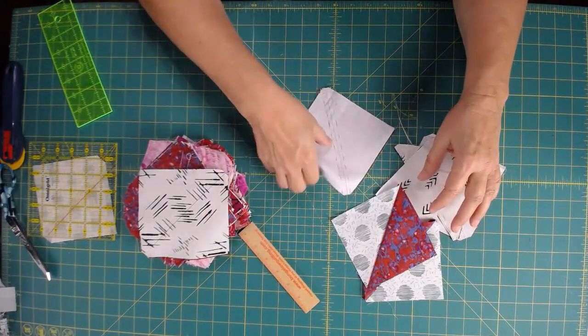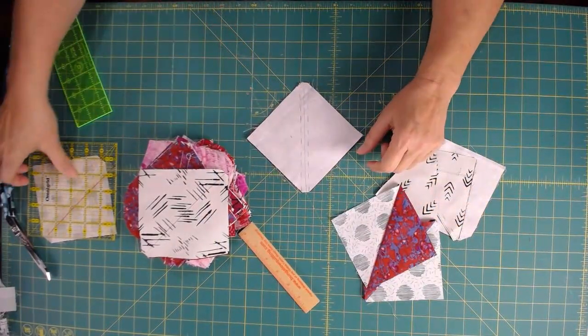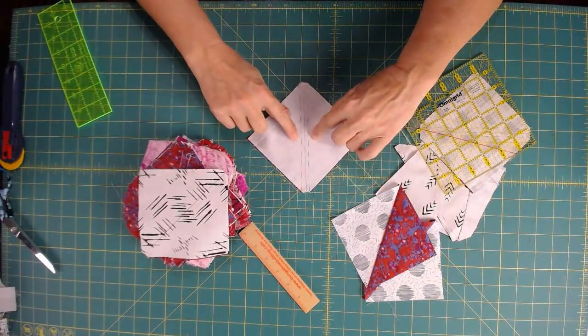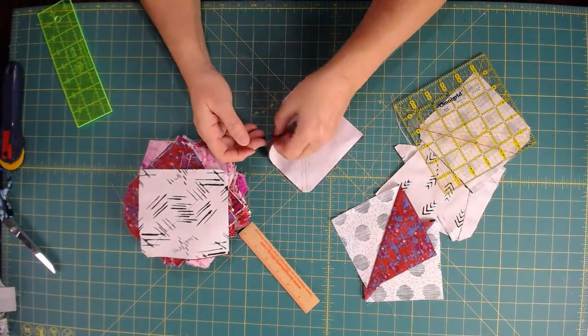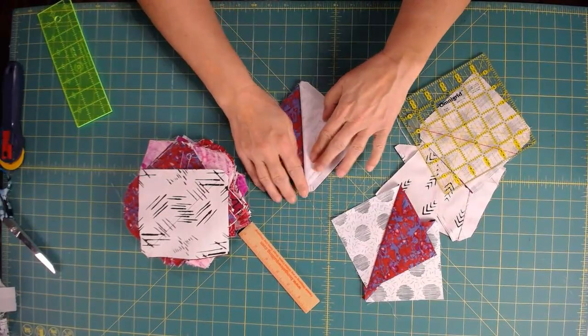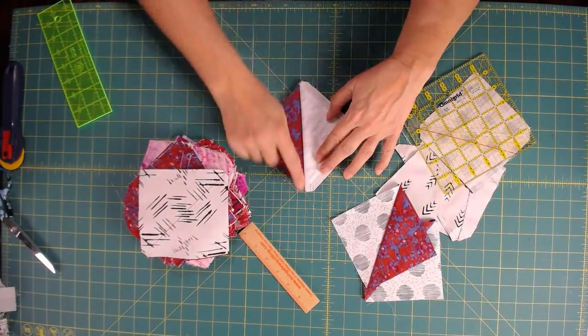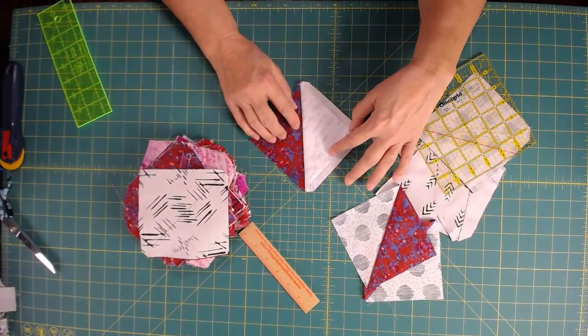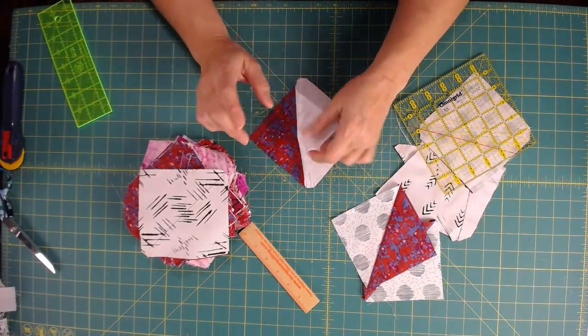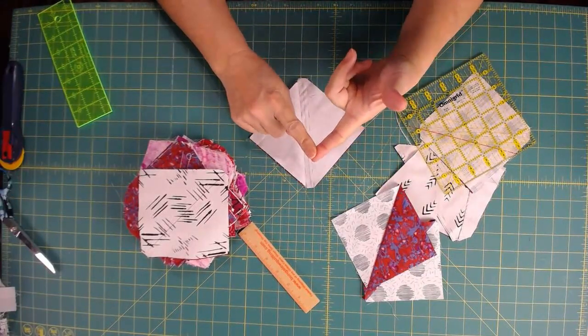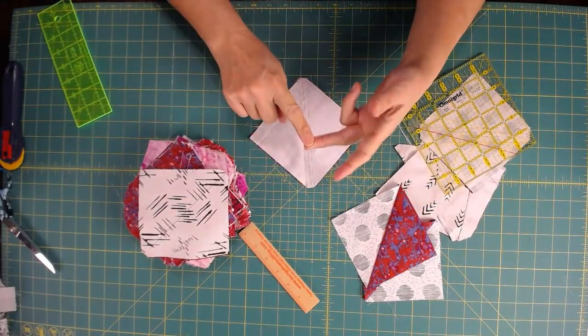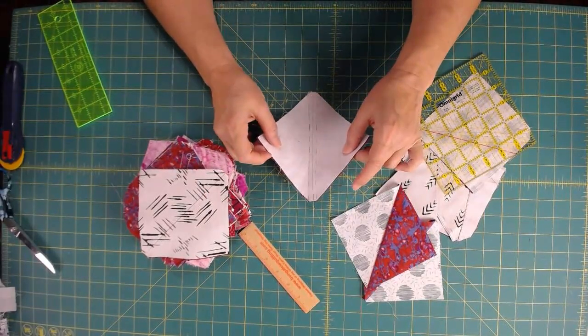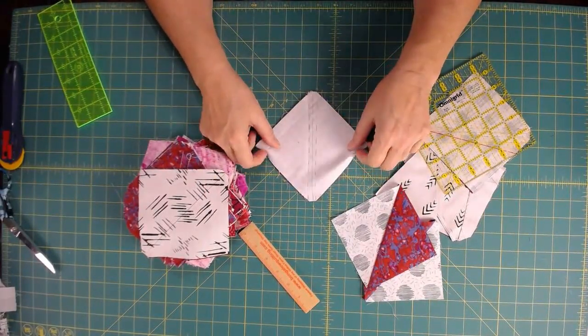Now there is one little thing I want to show you about trimming these blocks. When I sew my quarter inch seam, I do a scant seam. I find that when I open this, if I've drawn my line straight from corner to corner and I've sewn straight from edge to edge, then I get a really good square. There's a lot of factors. Is your five inch square cut straight? Is the line drawn straight? Are you sewing straight? And if anything's off, this can be a little skewed. But the good news is, we can fix that.